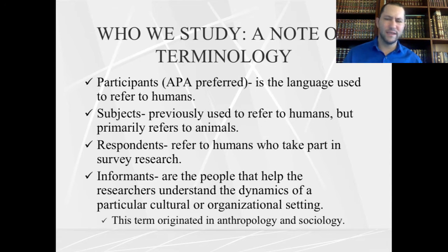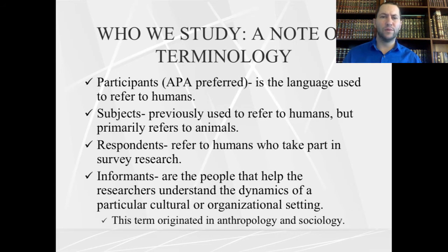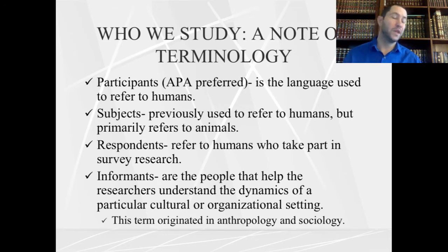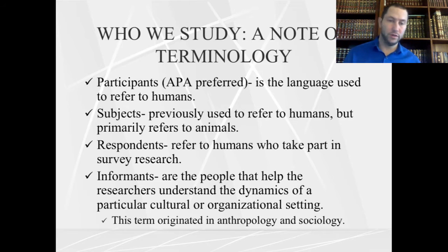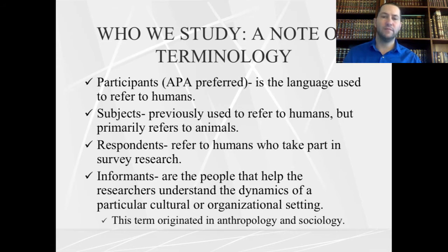Regarding APA linguistics, the terminology changes between humans and animals. We refer to human beings as participants and animals as subjects. You can use 'subjects' for human beings, but it's better to use 'participants.' If you're doing survey research, you describe individuals as respondents because they're responding to your survey. If you're studying the culture of an organization, people who participate might be referred to as informants — a strategy used more in anthropology and sociology.